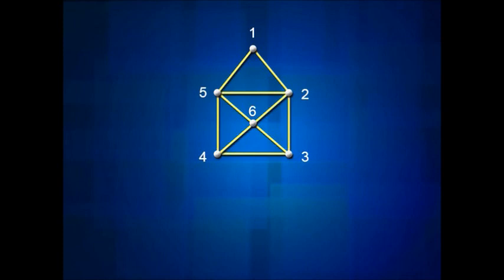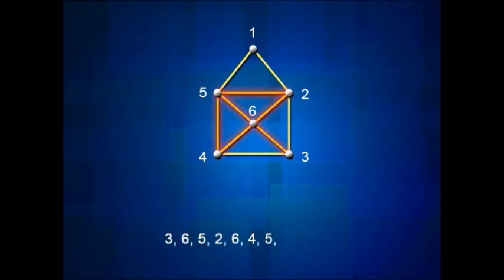If you're careful, starting at vertex 3 you can go from 3 to 6, 6 to 5, 5 to 2, 2 to 6, and then to 4, to 5, to 1, to 2, to 3, and then to 4. We call a graph like this drawable.